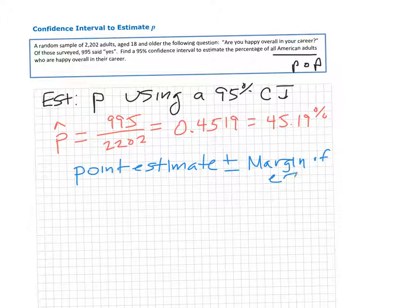The point estimate in this case - first of all, a point estimate means your one number best guess as to what P is. Your population proportion, because it's a proportion, will be some number between 0 and 1. That's the true proportion of people who are happy in their career.